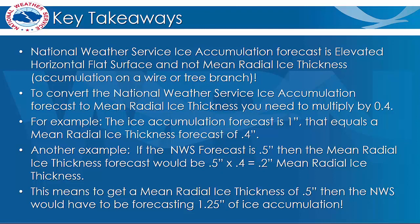This means if the forecasted ice accumulation by the National Weather Service is one inch, the mean radial ice accumulation forecast would only be 0.4 inches. To get a half inch of mean radial ice thickness, the National Weather Service official forecast would have to be 1.25 inches of ice. Even though the forecasted amounts are different between the two methods in these examples, the amount of ice and thus ice load is still the same.